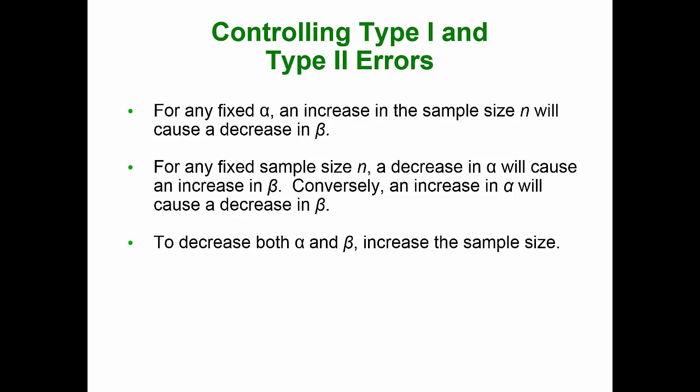For any fixed alpha, we can control a type 1 error: increasing the sample size n will cause a decrease in beta. For any fixed sample size n, if we decrease alpha it will cause an increase in beta; conversely, an increase in alpha will cause a decrease in beta. To decrease both types of errors, we want to increase our sample size.